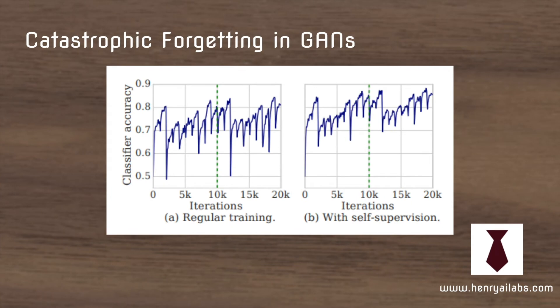This picture illustrates the idea of catastrophic forgetting. What this plot shows is if you train a model to do one-versus-all classification — say you have 10 classes — first you do class 1 versus all the other classes, then class 2, class 3, and so on. Without the self-supervision task, on the left, every time you switch, the model totally forgets the representations and performance drops all the way down. But with self-supervision, there isn't as much of a downward spike when you switch tasks.